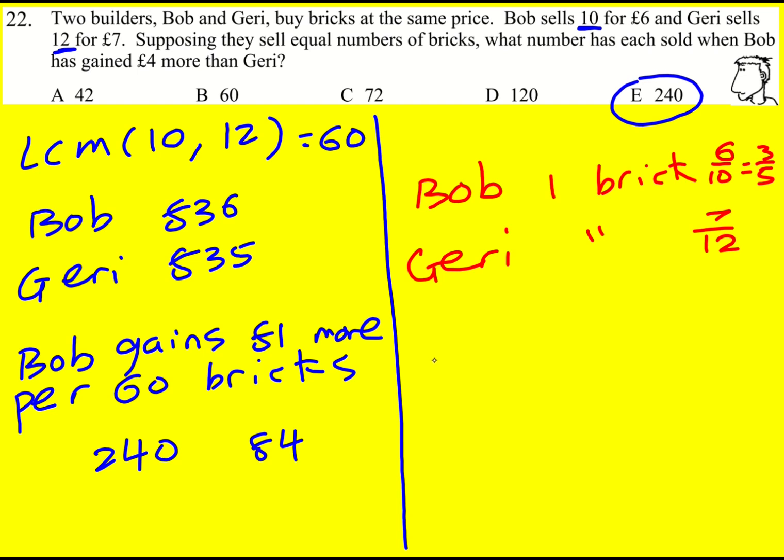I know they're selling the same amount, so I then created an equation. Bob is going to need to sell 3/5 times n if they each sell n bricks. And n, I should just say, is such that Bob is going to earn one pound more. So Bob is selling 3/5 n and Geri is going to sell 7/12 n. And these are not going to quite be equal, but going to be equal when Bob has got four pounds extra.